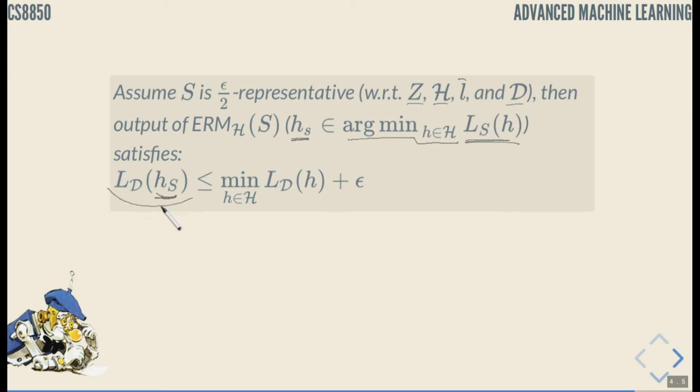The true loss on this minimizing hypothesis that's minimizing empirical risk, that's what this sub-index tells us, is less than or equal to a minimizer hypothesis of the true loss plus epsilon. How is that true?